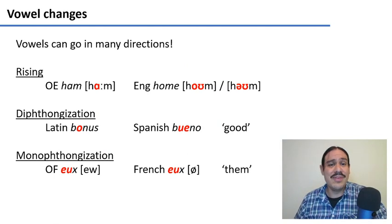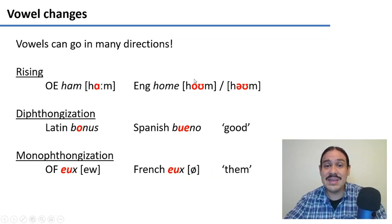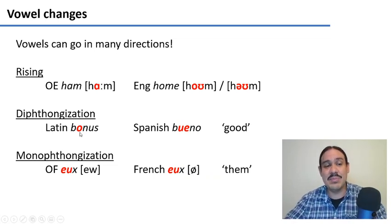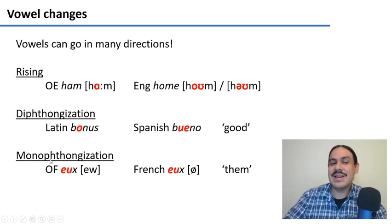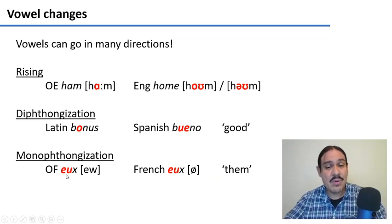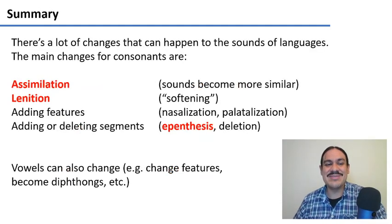Vowels can also do many things. Vowels can go up and down — in English, Old English 'ham' with a low vowel became the mid-high vowel 'home'. They can diphthongize: Latin 'bonus' became Spanish 'bueno'. Old French 'eu' became modern French 'eux'. So quite a few things can happen to the sounds of a language. In the next video, we'll study how the meaning of words changes.